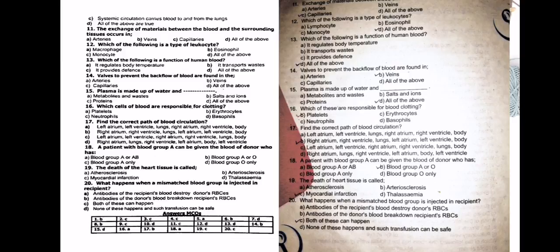Moving on to MCQ number 19: the death of heart tissue is called dash. Atherosclerosis? No. Arteriosclerosis? No. Myocardial infarction? Yes. Option D, thalassemia? Reject this one. The correct answer is option C, myocardial infarction. Now moving on to our next task which is the short question answers.